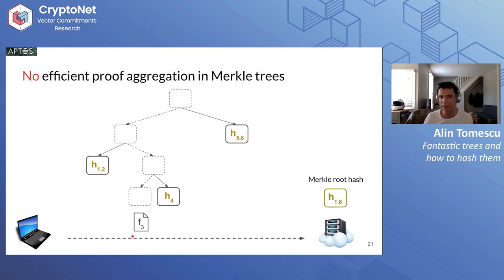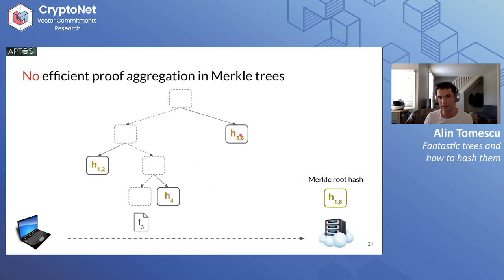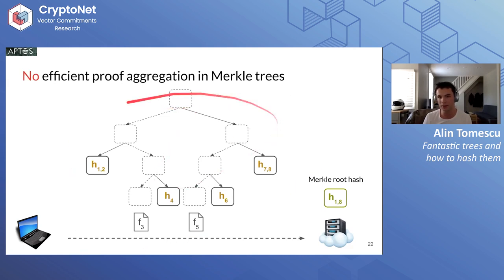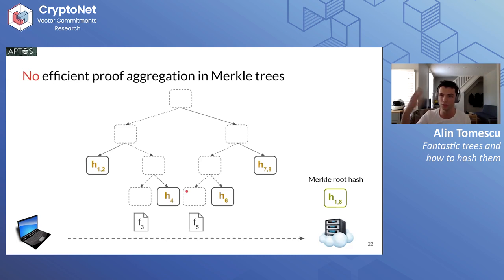Another problem is proof aggregation. If you're proving one thing like F3, that's nice. But if you're proving two things, you have to give two proofs. You save a little — for instance, you don't need to send a hash that gets computed on the way up from F5 — but not much. Asymptotically, if you're proving k things, you still have to give k Merkle proofs, so it's k·log(n) size. There's not much you can do in Merkle trees beyond throwing a SNARK at the problem to aggregate proofs, which can be quite inefficient or might require SNARK-friendly hash functions that need more cryptanalysis.